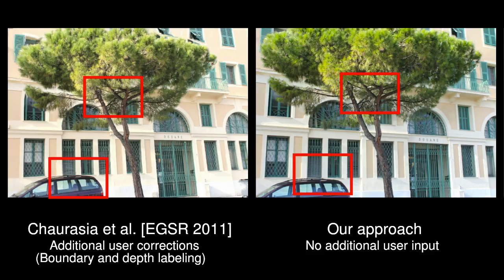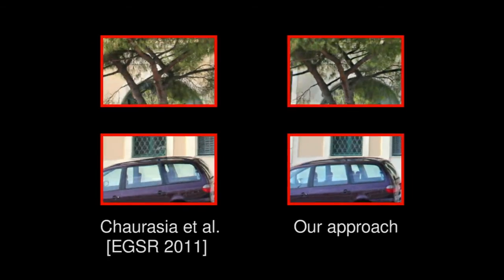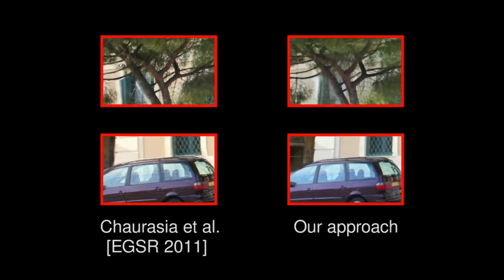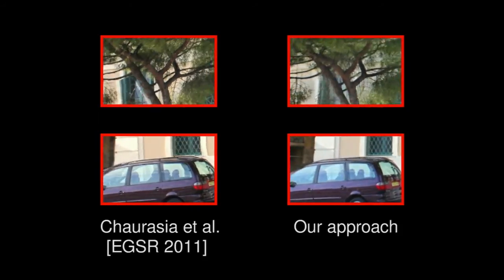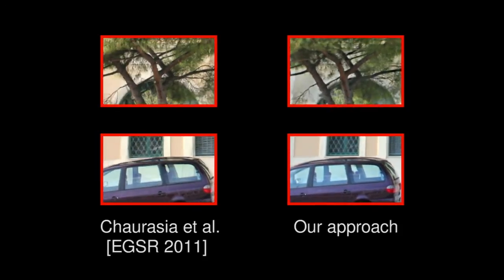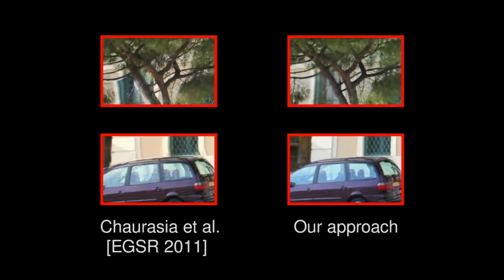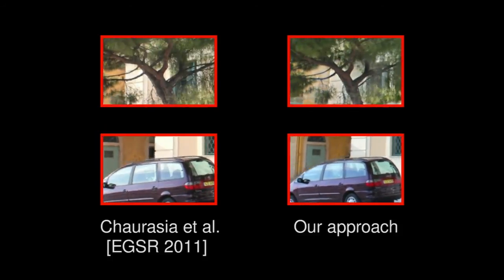In this comparison, our approach shows its strength in the moving treetop and the semi-translucent car windows. Both scene parts violate basic assumptions of depth-based rendering but are nevertheless handled by our algorithm in a visually plausible way.